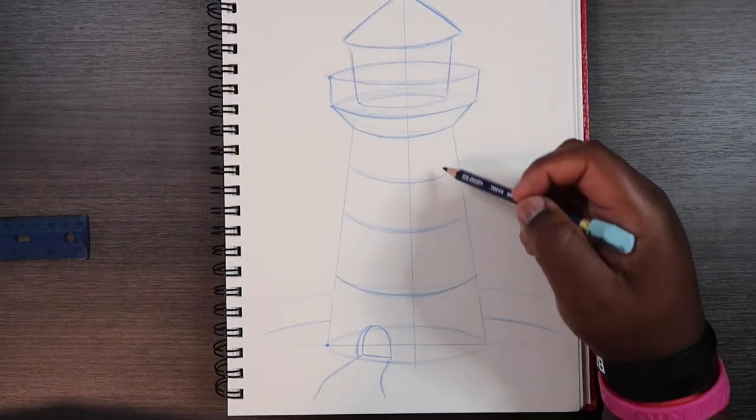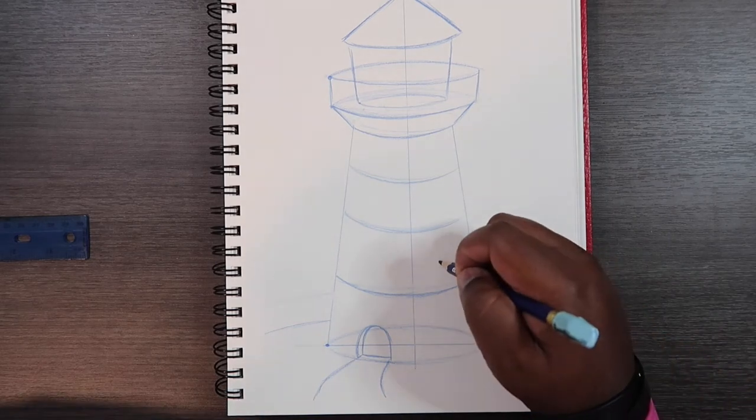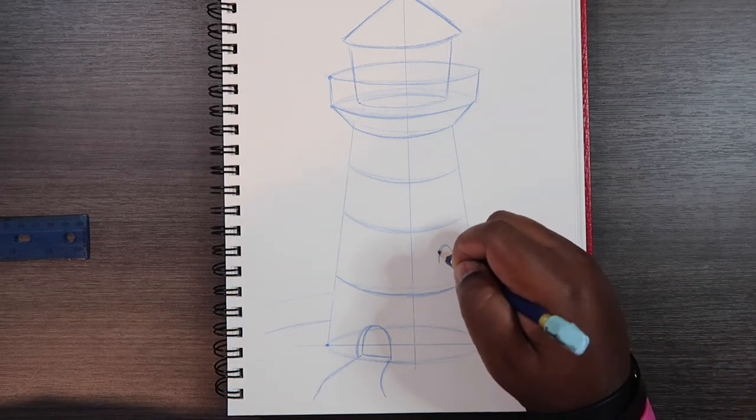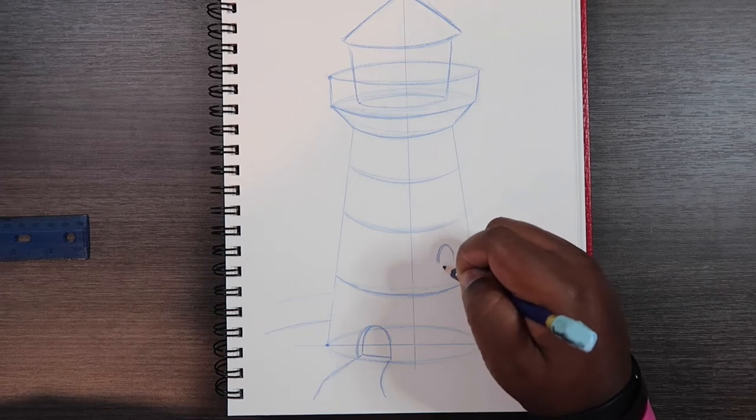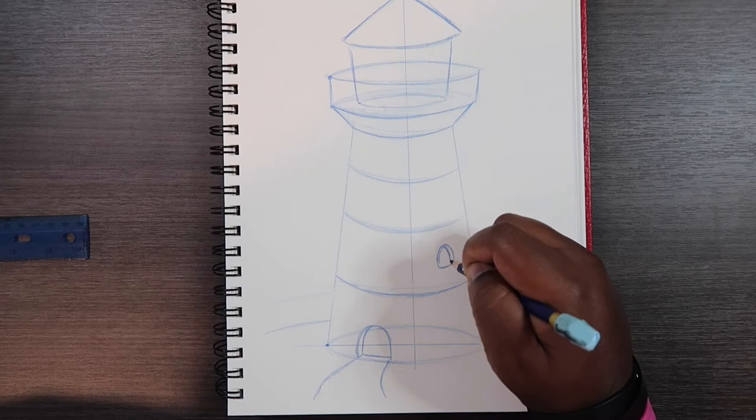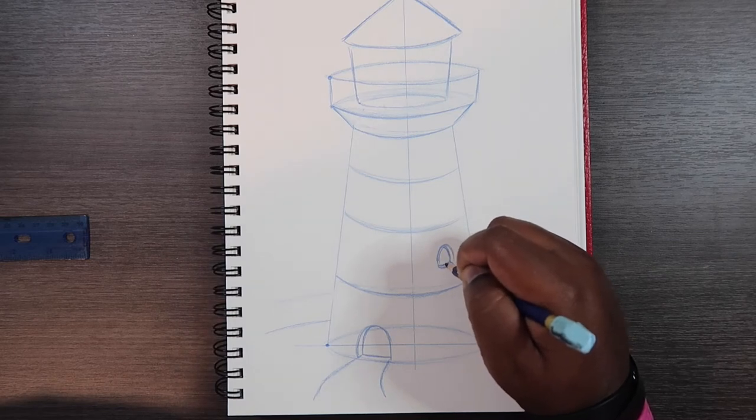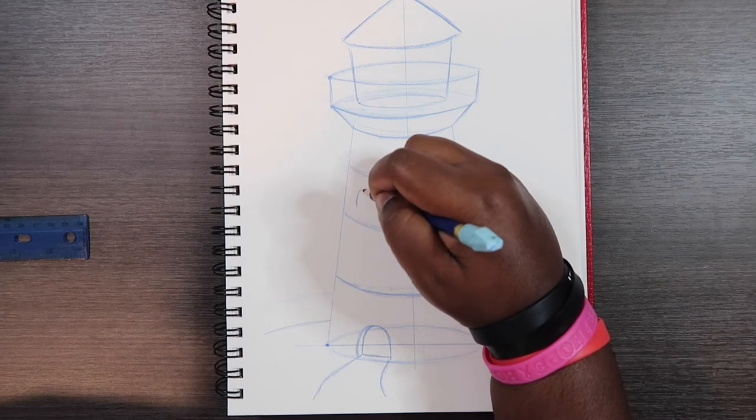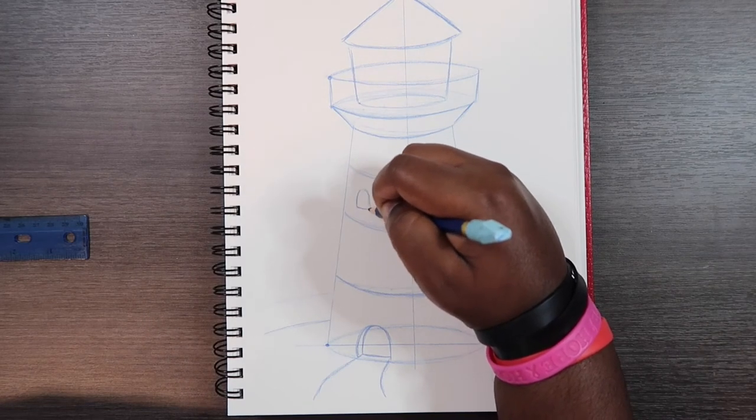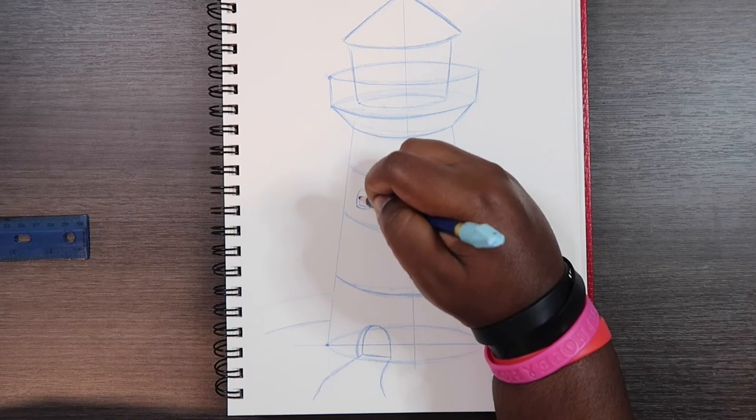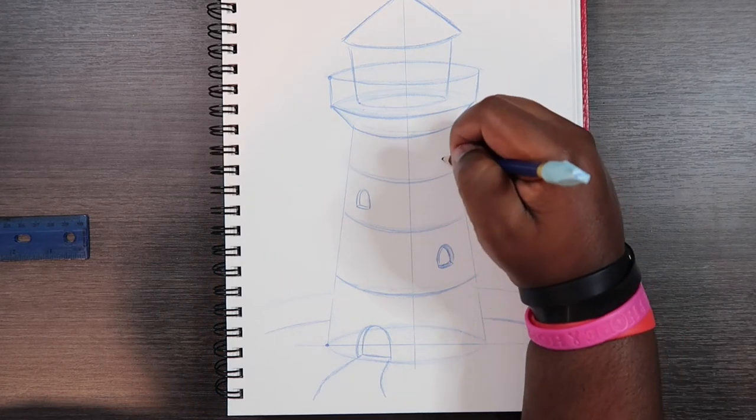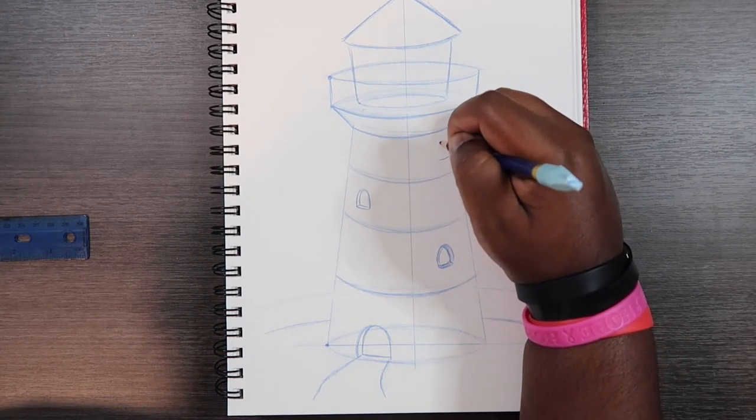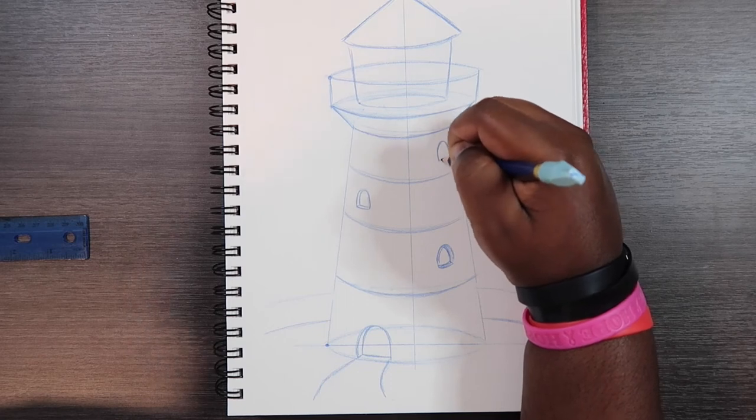Alright, and now on each of these sections, we can draw windows. So I'm going to draw a window on this side. And then I'm going to give it some depth. And then another one up here.